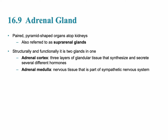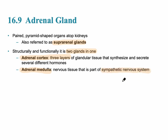The adrenal gland is located just above the kidney and for that reason it's also referred to as the suprarenal glands. This specific gland has two functionally different regions, so it's almost like it has two glands in one. The outer region is called the adrenal cortex, made up of three specific layers each having a different function, and the adrenal medulla is the innermost layer and is a part of the sympathetic nervous system — the fight or flight part of the body.